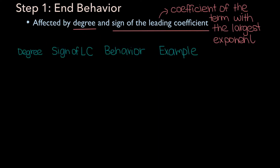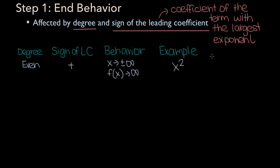Now that we've defined both factors that affect end behavior, let's create a table to illustrate the four possible end behaviors polynomials can have. The first scenario: if you have a polynomial with an even degree and a positive leading coefficient, then as x approaches positive or negative infinity, f of x will approach infinity. An example is x squared — as x approaches positive infinity or negative infinity, the function grows towards infinity.